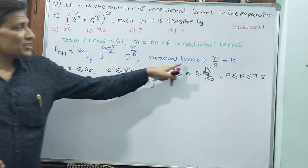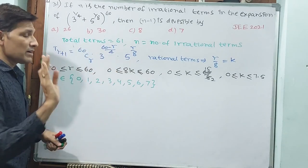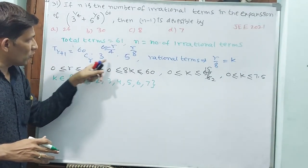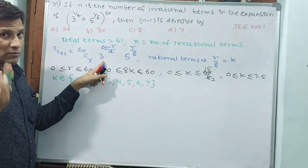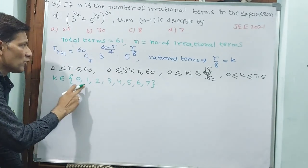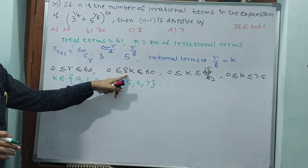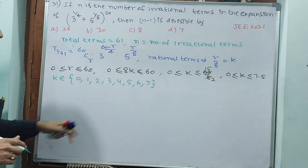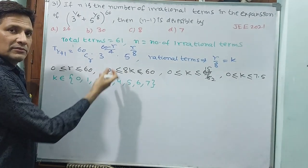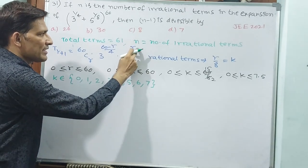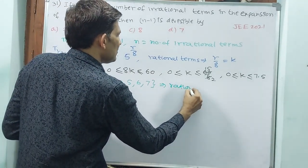Are these rational numbers? Yes, because we are finding rational terms. Now we also apply this to 3^((60-r)/4). For k=0, r=0: 60/4 = 15, so 3^15 is rational. For k=1, r=8: (60-8)/4 = 52/4 = 13 — divisible by 4, rational. For k=3, r=24: (60-24)/4 = 36/4 = 9 — rational. For k=5, r=40: (60-40)/4 = 20/4 = 5 — rational. For k=7, r=56: (60-56)/4 = 4/4 = 1 — rational. So all 8k multiples of r make 3^((60-r)/4) rational too.